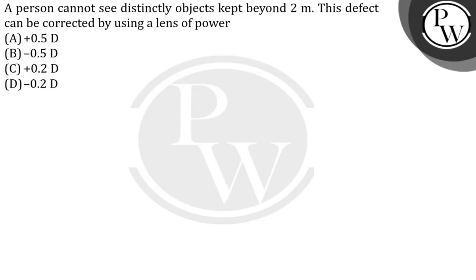The question given here is: a person cannot see distinctly objects kept beyond 2 meters. This defect can be corrected by using a lens of power. We have to find the power of the lens.